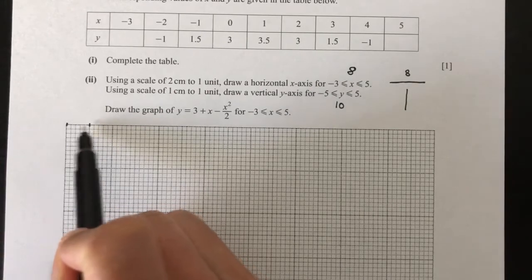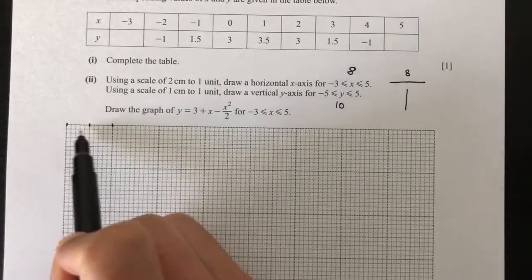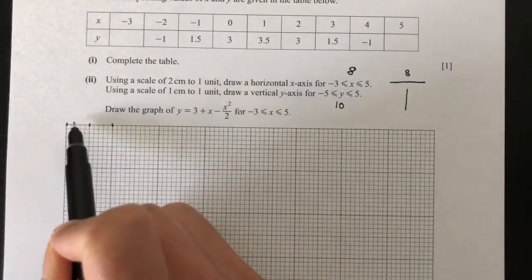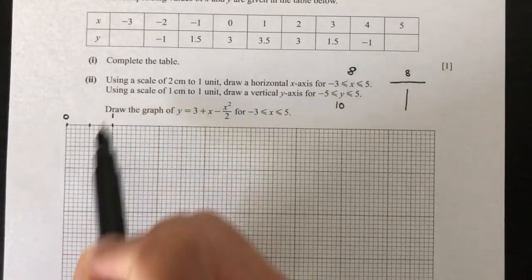So 2 boxes. So 2 centimeters. This is 2 boxes for 1 unit, which means if that was 0, this will be 1.